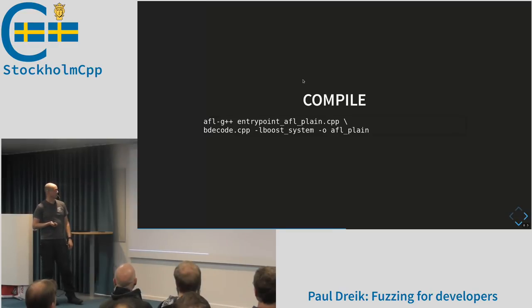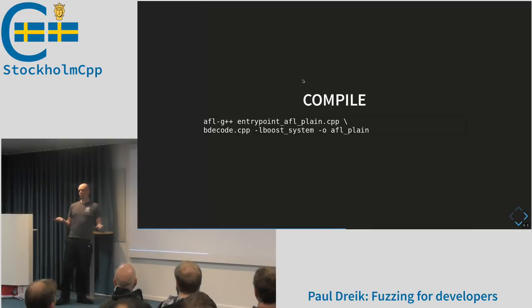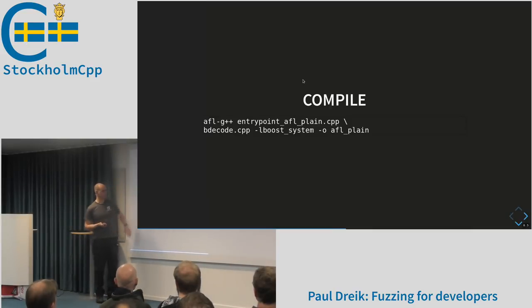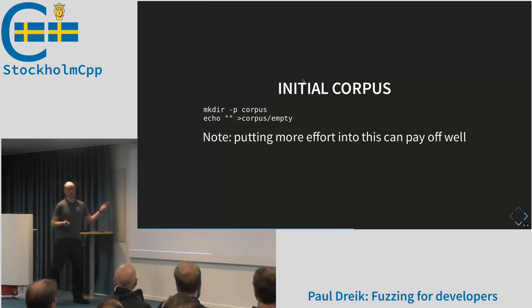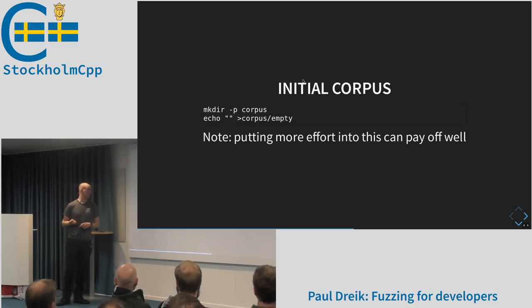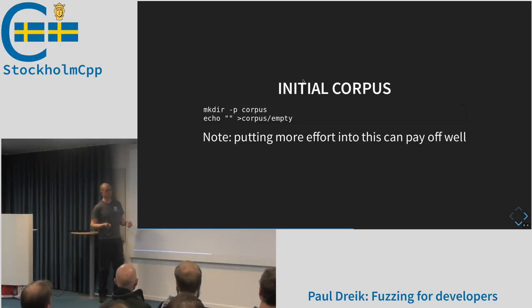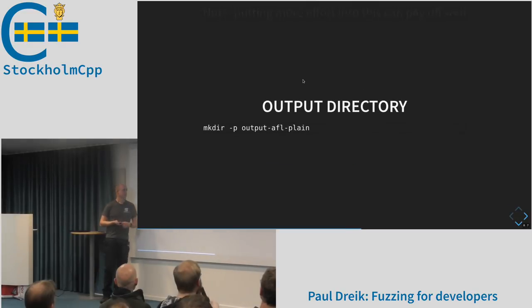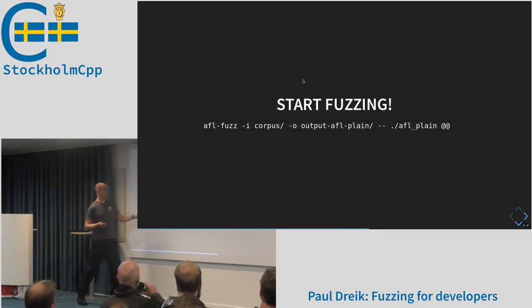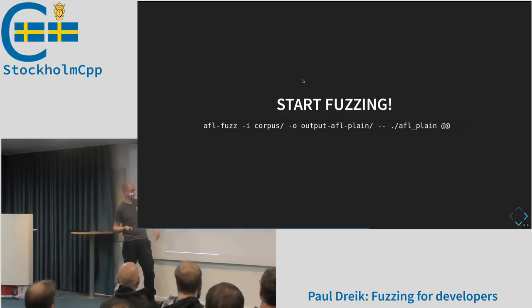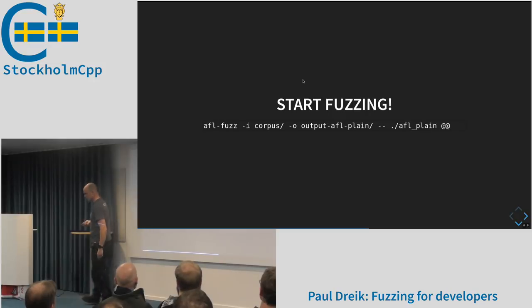We need to write an entry point for AFL. You define a main function, take the first argument on the command line as a filename, open it, read it into a buffer, and call BDecode. Then you compile the entry point — the only difference from a normal compile is that it says 'afl-' in front. You supply an initial corpus; AFL doesn't like it if you don't have one. If you know what to put in the initial corpus, please do — it makes fuzzing more efficient. Then create the output directory and run: call afl-fuzz, specify where the corpus is, where output goes, and how to invoke the program. The '@@' is the placeholder for the file.